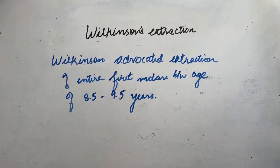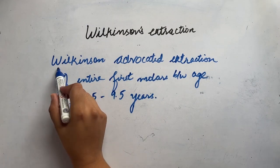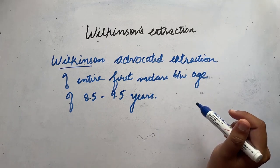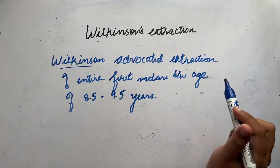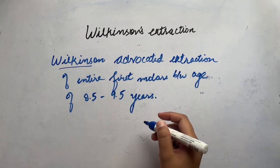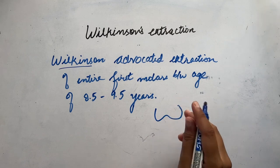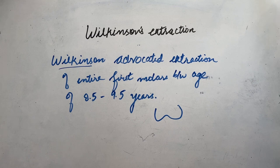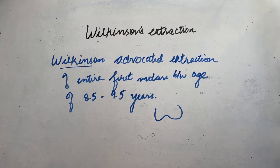Next is Wilkinson's extraction. Wilkinson advocated extraction of all first molars between the age of eight and a half to nine and a half years — removing all four first molars across all four quadrants: 16, 26, 36, and 46. The rationale behind this was that since the first permanent molars are highly prone to dental caries, it is better to extract them.